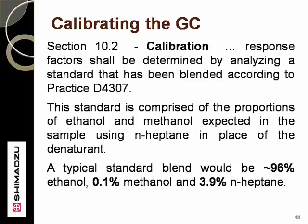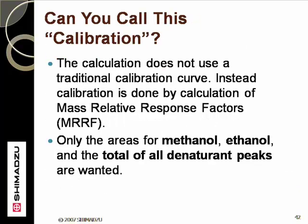The method makes a stipulation that the user can use typical MRRF values if they do not want to measure these values specific to their instrument. However, the typical MRRF values do not seem to match well with the performance of current GC hardware. The method does not use traditional calibration practices with a set of standards to create a standard curve; instead, it uses an internal comparison where ratios of peak areas are used to calculate content. The MRRF values are critical to getting a more accurate result.